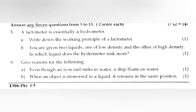Question 5: A lactometer is essentially a hydrometer. (a) Write down the working principle of a lactometer. Answer: principle of flotation. (b) You are given two liquids, one of low density and other of high density. In which liquid does the hydrometer sink more? Answer: lower density.